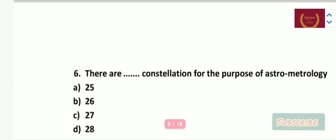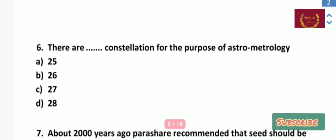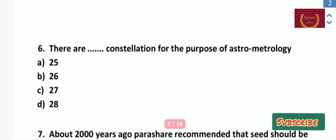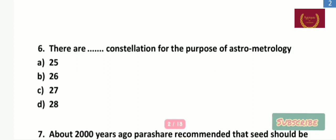Question number 6: There are how many constellations for the purpose of astrometeorology — 25, 26, 27, or 28? The right answer is 27.